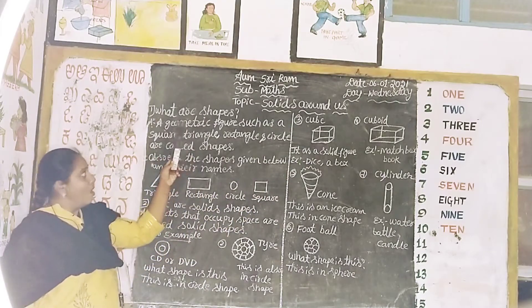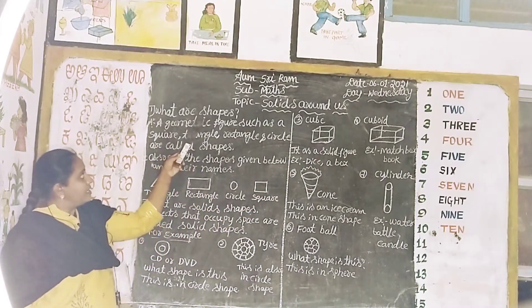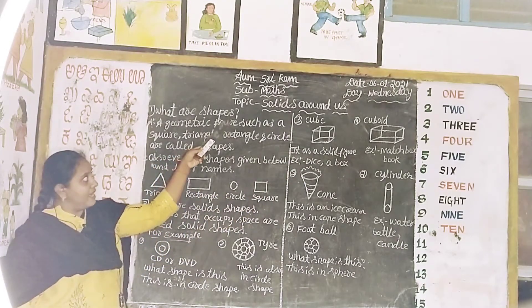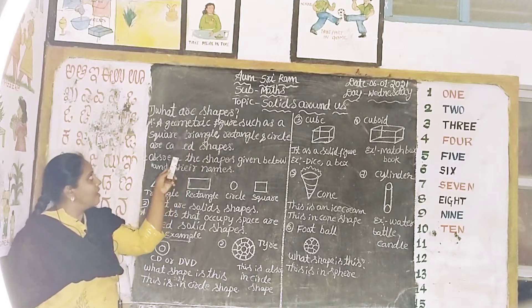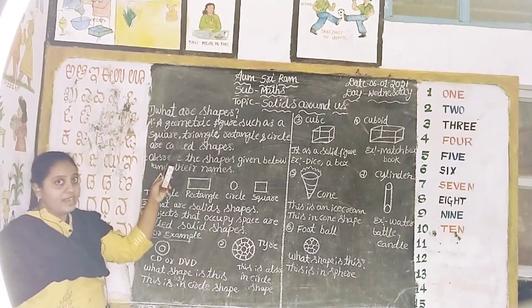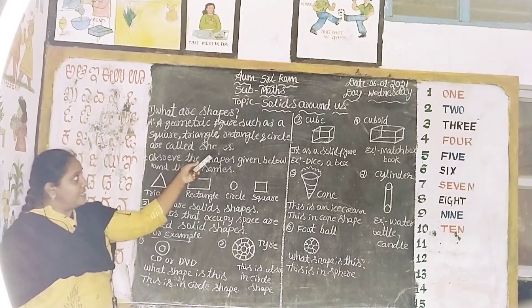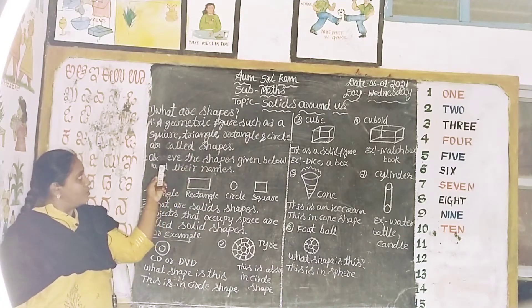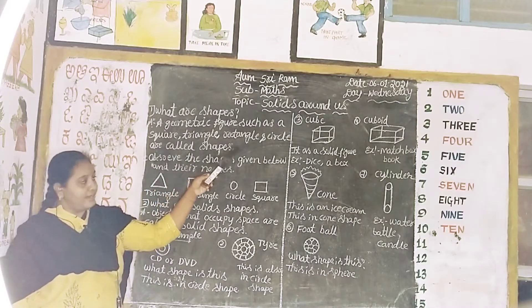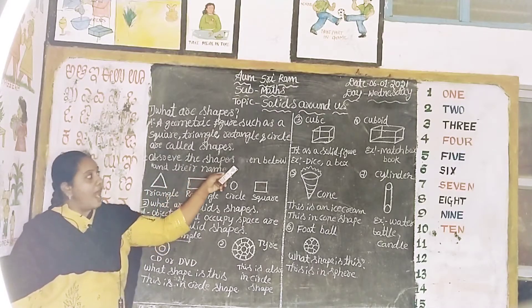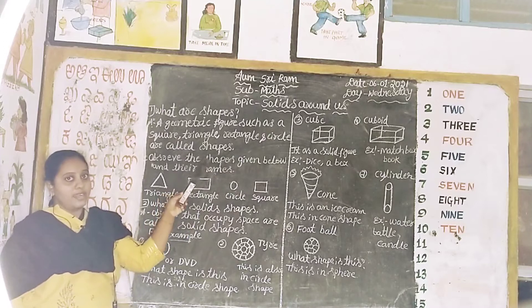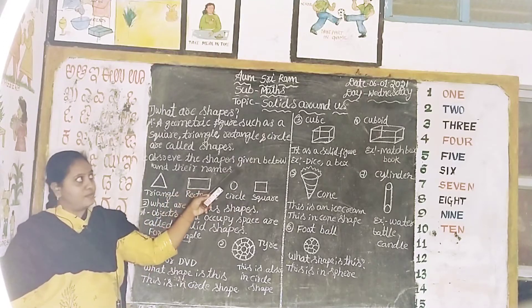What are shapes? A geometric figure such as a square, triangle, rectangle, and circle are called shapes.